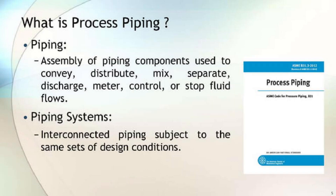What is Piping and Piping System? Piping is the assembly of piping components used to convey, distribute, mix, separate, discharge, meter, control, or stop fluid flows. A Piping System is interconnected piping subject to the same sets of design conditions.